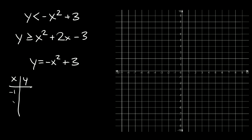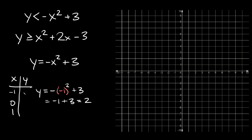For x, let's plug in negative one, zero, and positive one. If we plug in negative one for x, we get y equals negative one squared plus three. Negative one squared is positive one, and positive one times negative is negative one. So negative one plus three equals positive two. One point on our parabola is negative one, two.